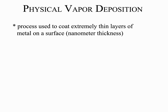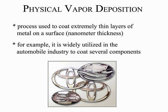Physical vapor deposition is a process used to coat a surface, such as a wafer, with an extremely thin layer of metal. For example, it is widely utilized in the automobile industry to coat several components, as shown here.